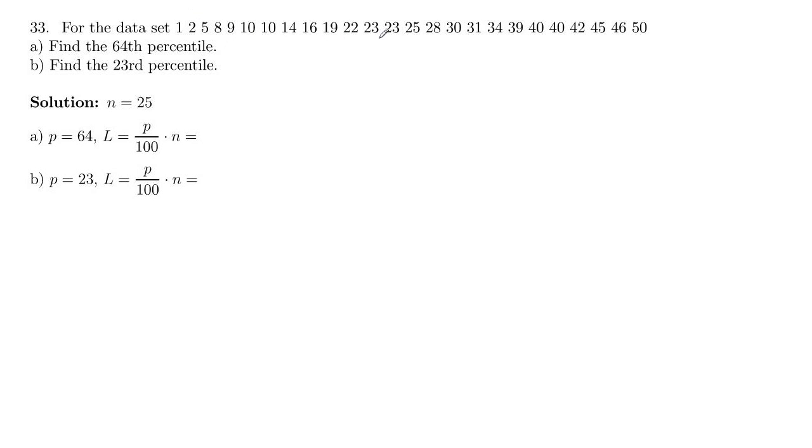Here we have a data set of 25 numbers, so sample size of 25, that's n equal to 25. We want to find the 64th percentile and 23rd percentile. Remember, 64th percentile means the value with 64% of the data below it.